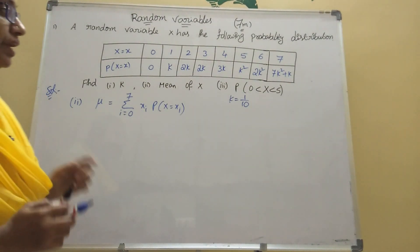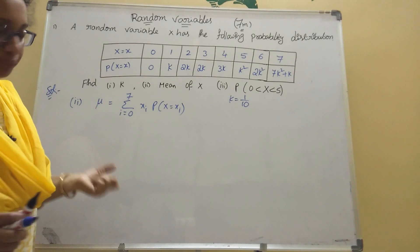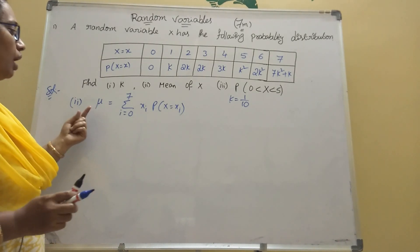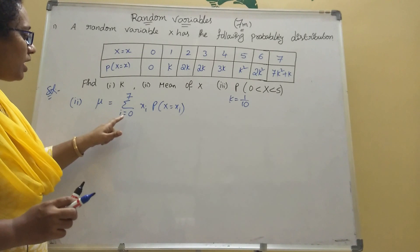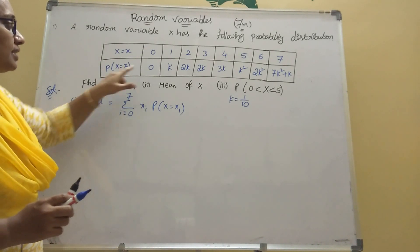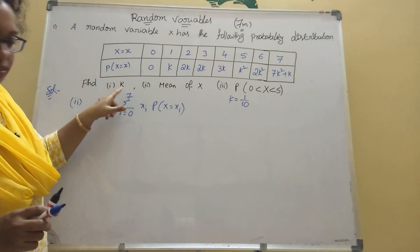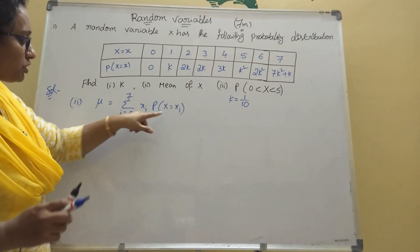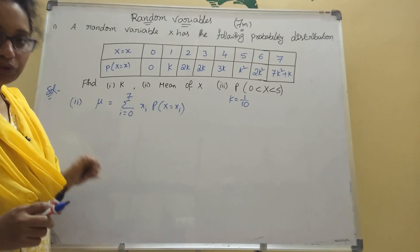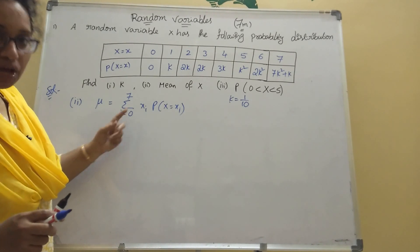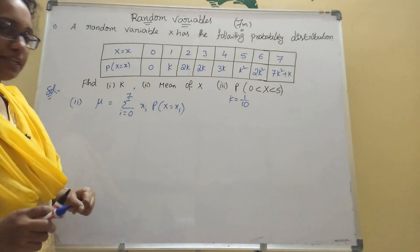Now for the second question: find the mean of x. The formula for mean in random variables is mu equals sigma from i equal to zero to seven of xi into p(x equal to xi).